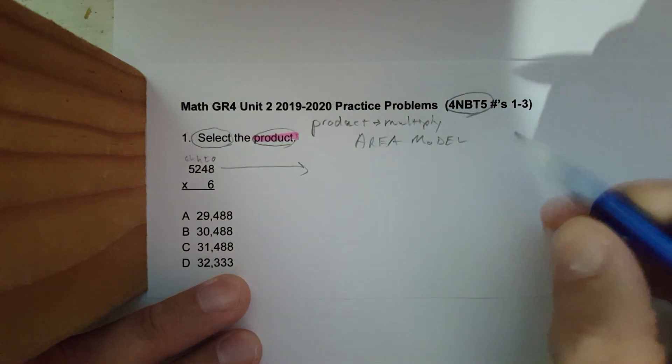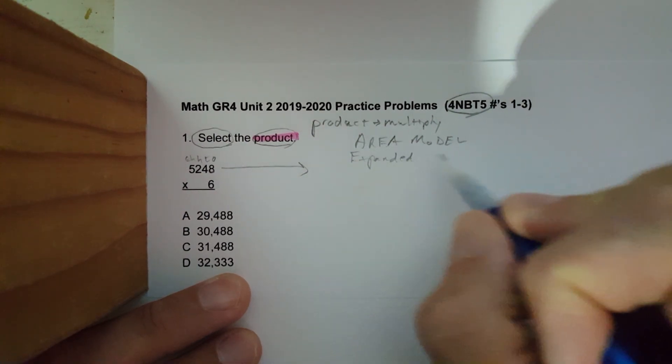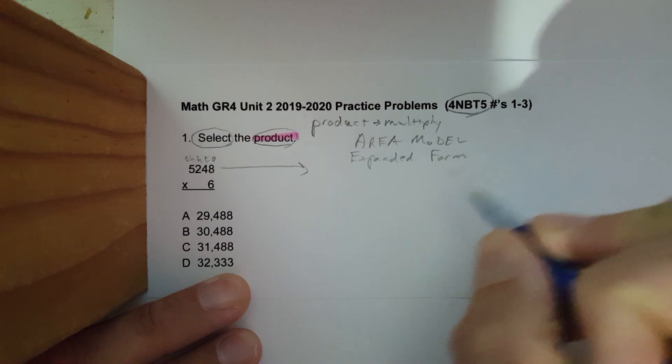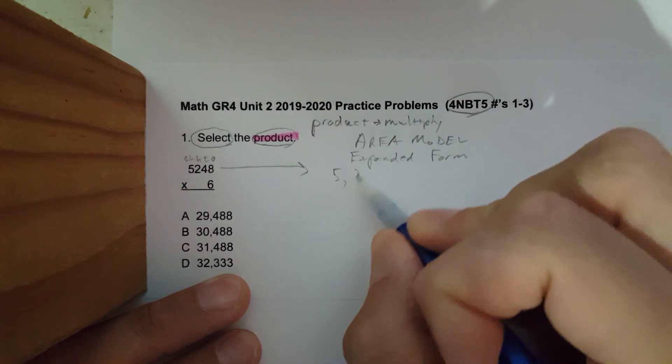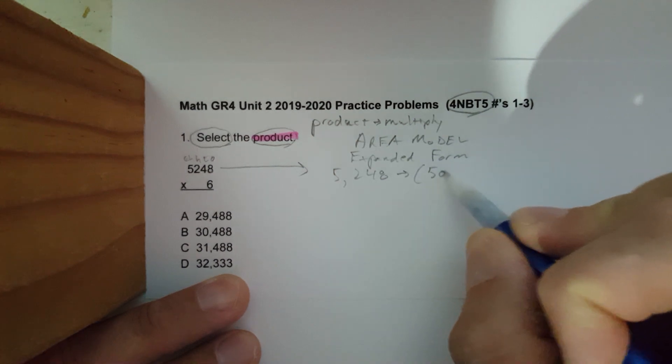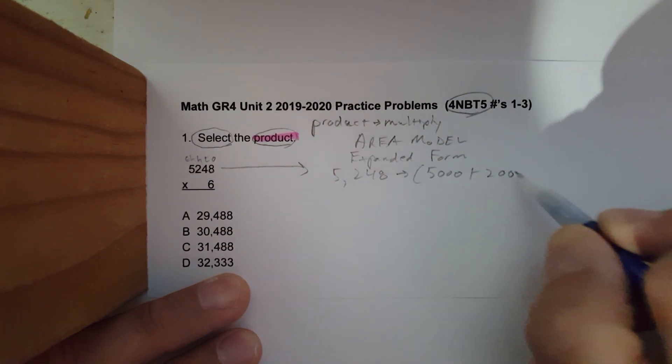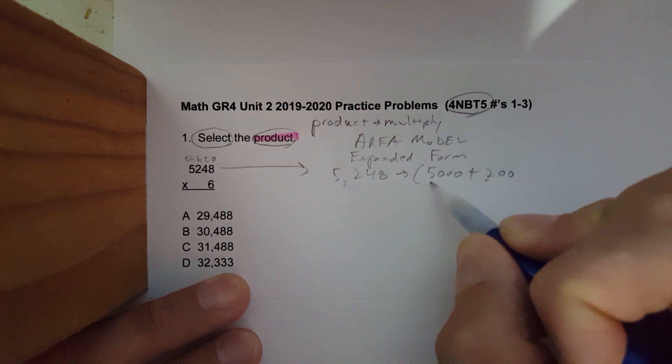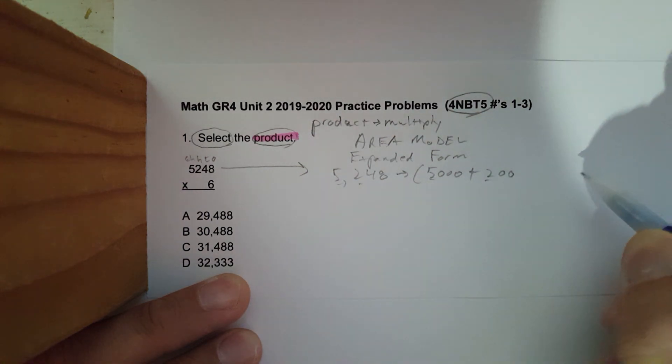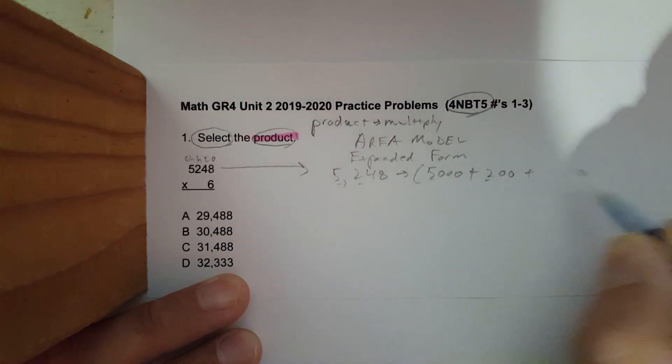We will write it in expanded form, so 5,248 will become 5,000 plus 200. Make sure that you're copying the digits correctly. I did another recording where I put the 200 as a 300. One digit written incorrectly will cause the problem to be wrong.